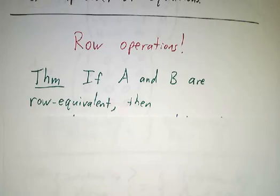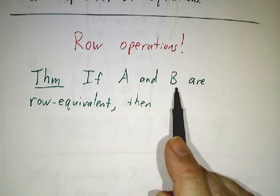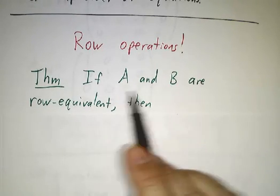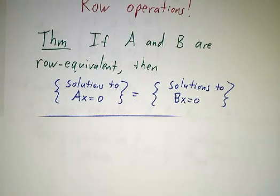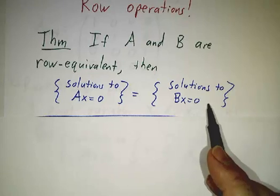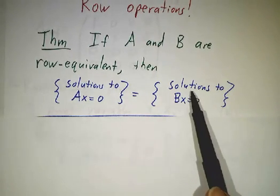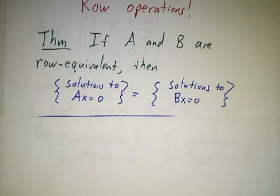So if A and B are matrices that are row equivalent, row equivalent means that starting with one of them, you can get the other by row operations. And then of course you could reverse the row operations and get the first one from the second. So you can go either direction. If they're row equivalent, then whatever the solutions are to Ax equals 0, those are the same solutions you would have to Bx equals 0. Because you can convert these equations to these equations by rescaling the equations, adding a multiple of one to another, or swapping the equations.